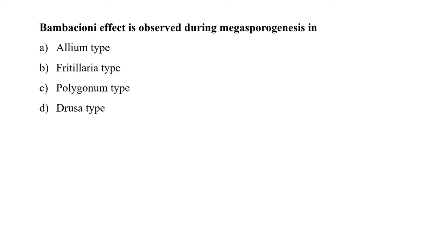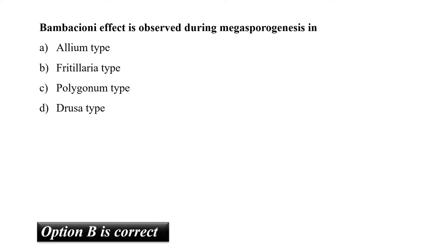The next question is: Bambacioni effect is observed during megasporogenesis in? This effect was first reported by Bambacioni in 1928. According to this effect, the fusion of spindles of the three chalazal nuclei in the chalazal megaspore forms a triploid nucleus in Fritillaria and Lilium. So our correct option is B, that is Fritillaria type.